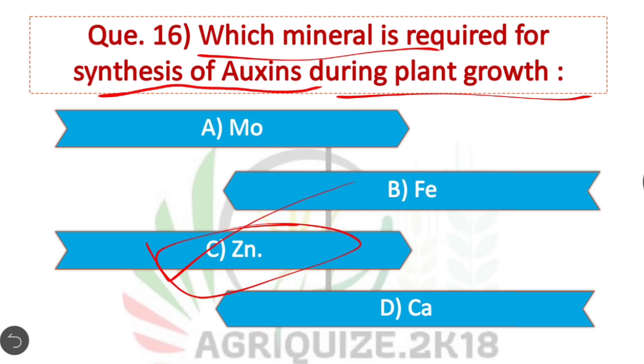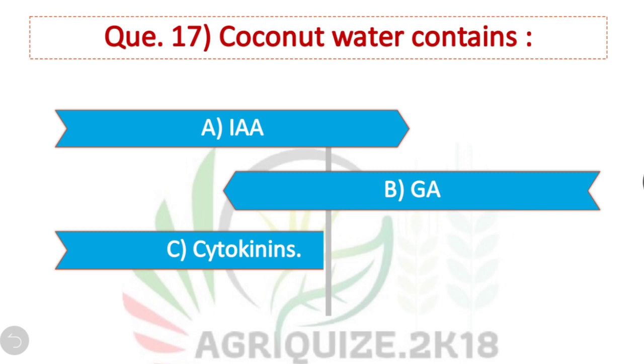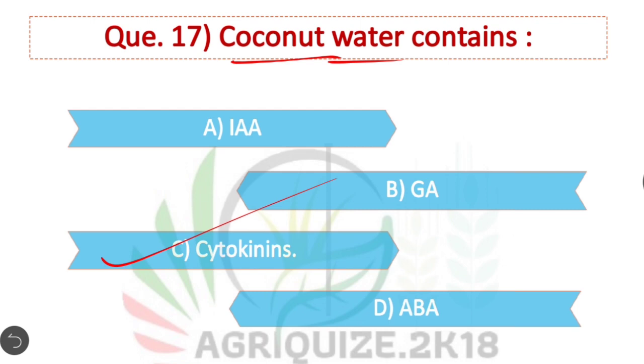Question 17: Coconut water contains — Cytokinins. Option C is correct. Coconut water contains cytokinins.